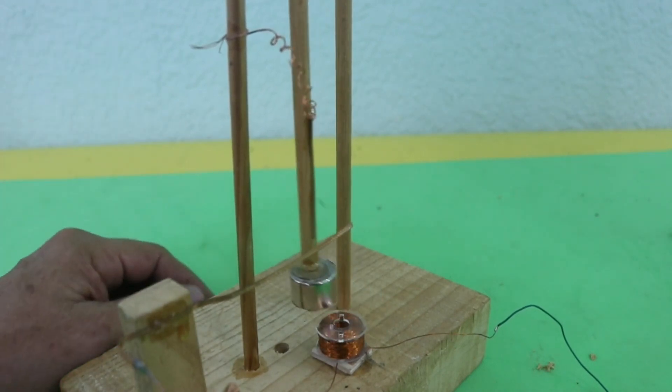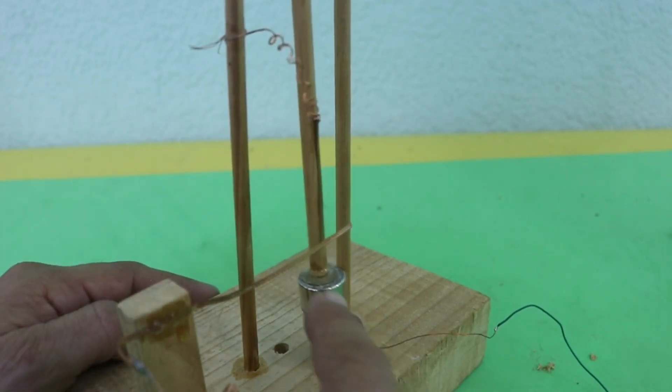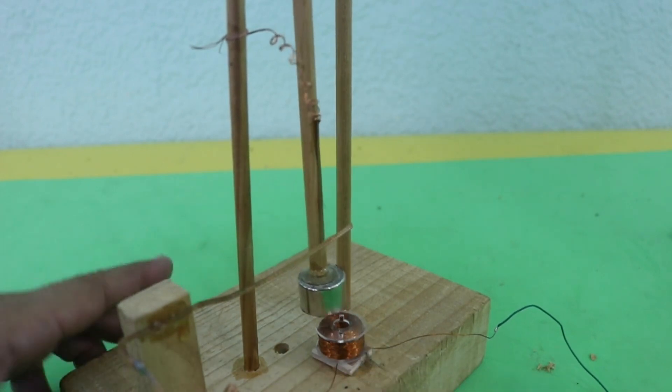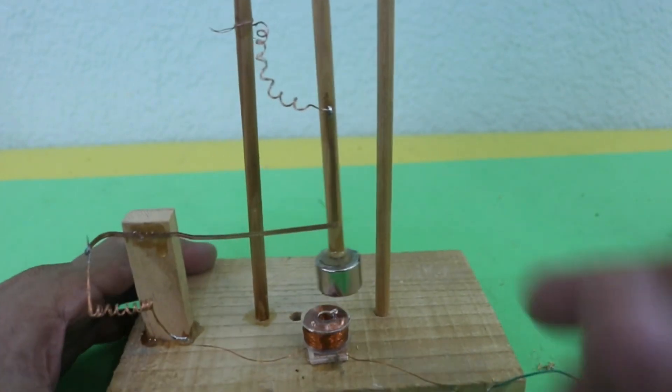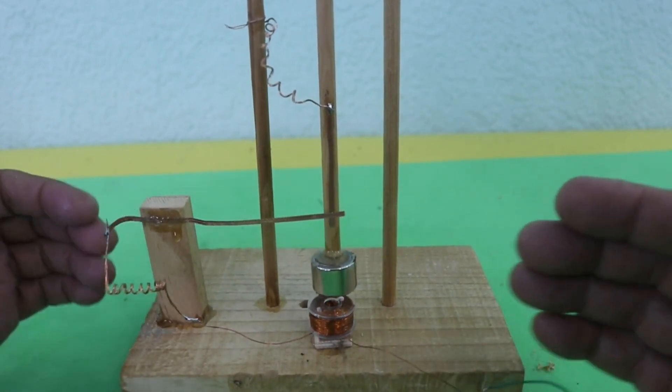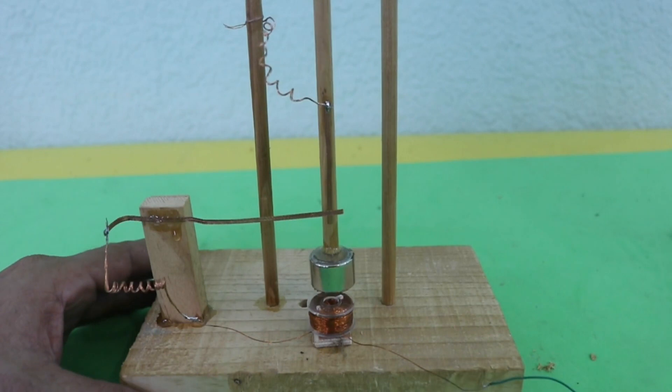Therefore, each half oscillation, the magnet has a little force from the coil that makes its movement to continue indefinitely. So, let me connect and see how it works.